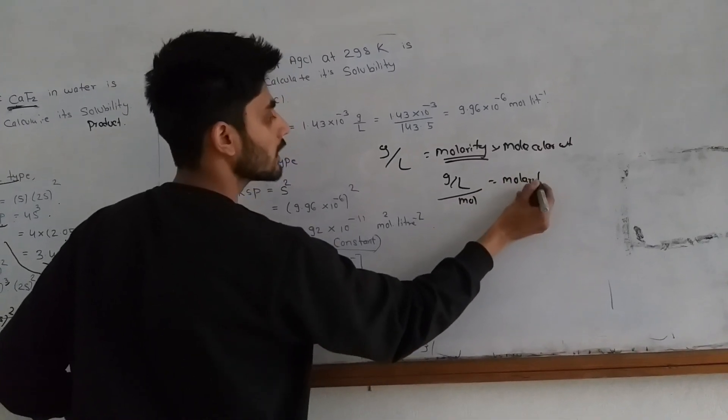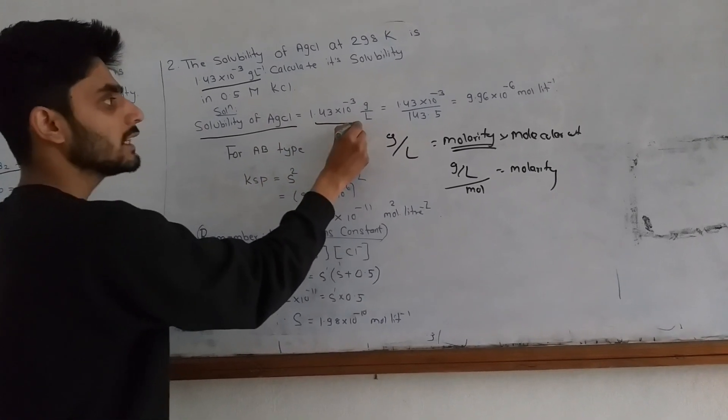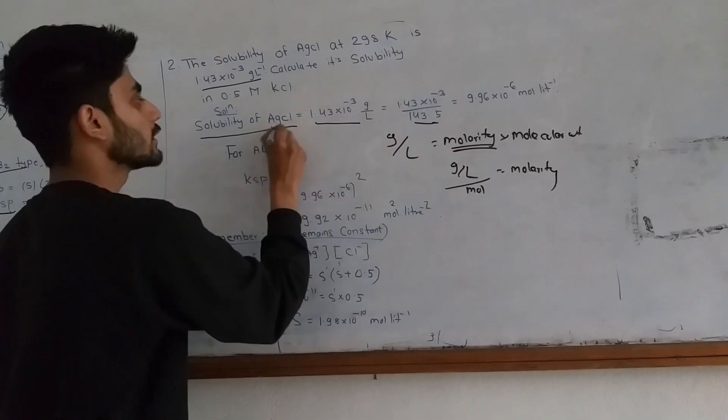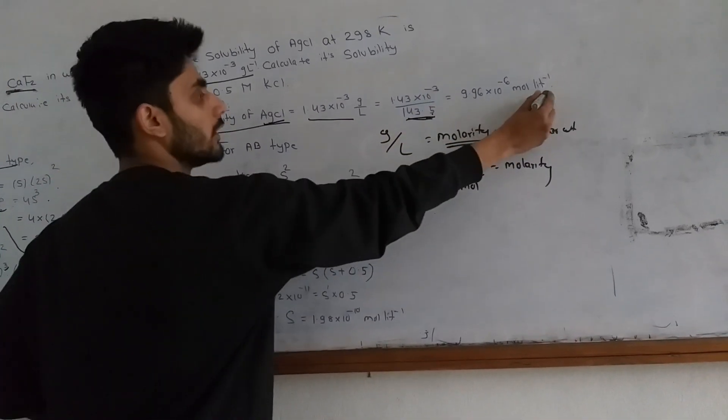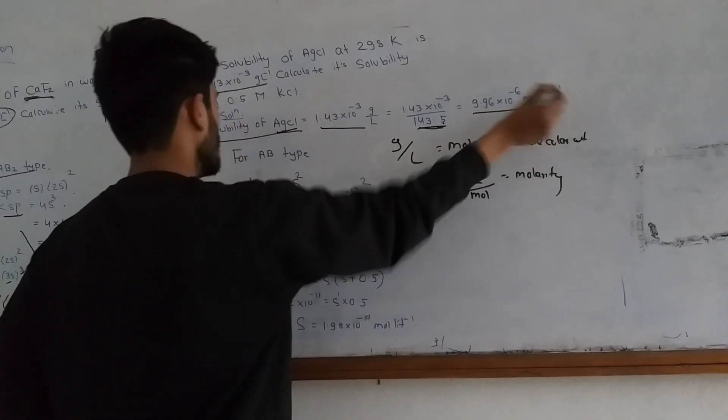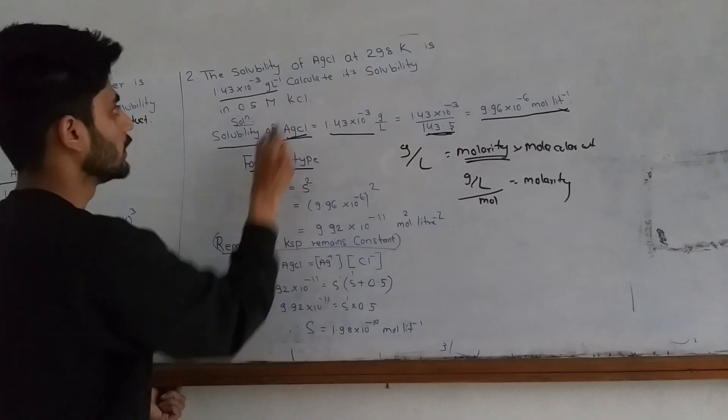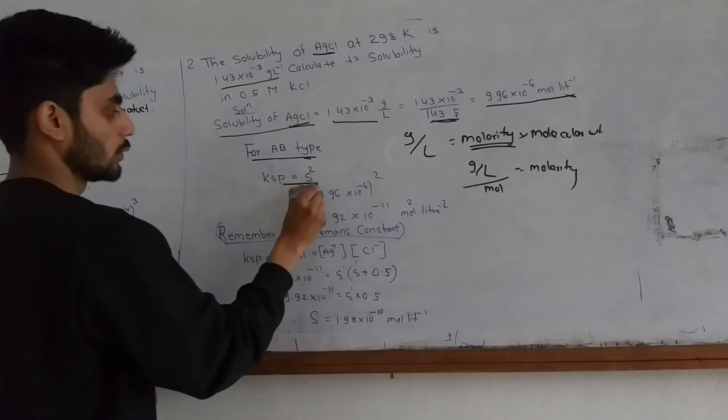First of all, we have molecular weight. Solubility is grams per liter. When it comes from molecular weight, the value is 124.5. So we have to divide by this factor to give solubility in moles per liter. And this is AB type.